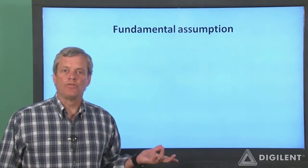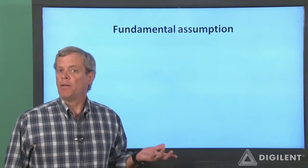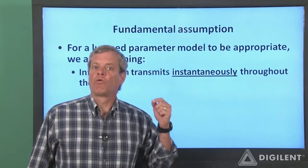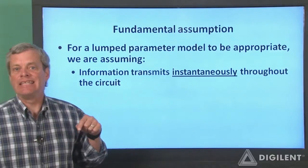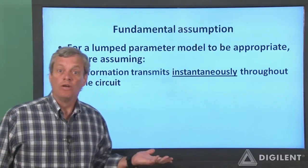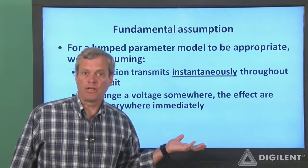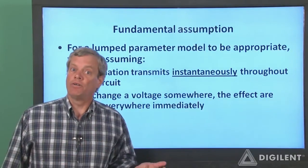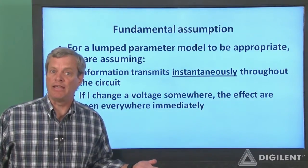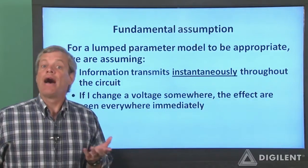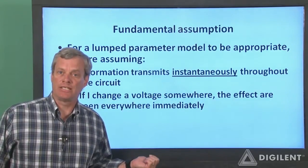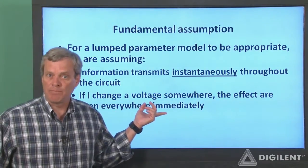Now, we will nearly always assume that our circuit can be represented by a lumped parameters model, but that assumption is not necessarily always true. For a lumped parameters model to be appropriate, what we're really assuming is that information transmits instantly throughout the circuit — that is, the speed of information transmission is infinite. So if I change a voltage or a current somewhere in the circuit, the effect is seen everywhere instantly. As far as we know, the theory of relativity limits the speed of information transmission to less than the speed of light, so this assumption is not exactly true. However, if we change our voltages and currents slowly relative to the time taken for the information to get to other parts of the circuit, then the assumption is acceptable and becomes very useful.